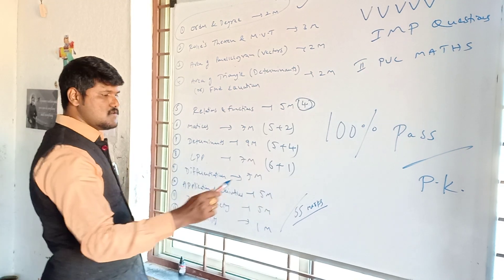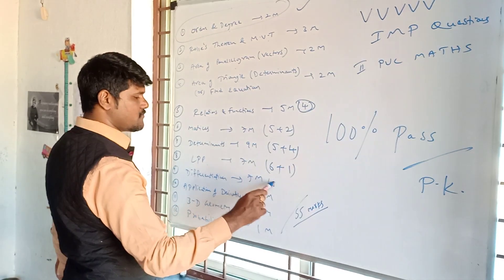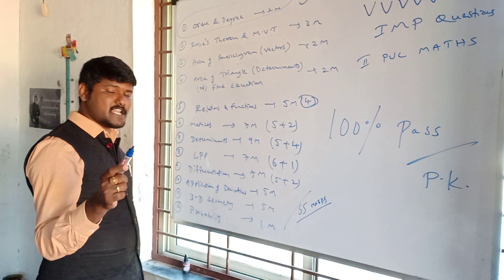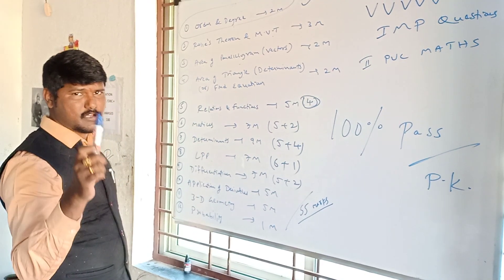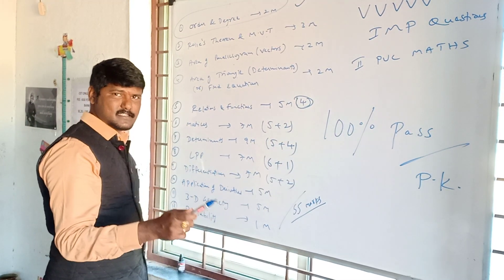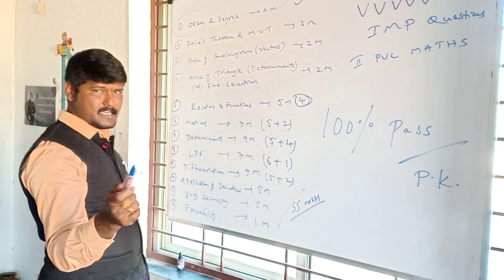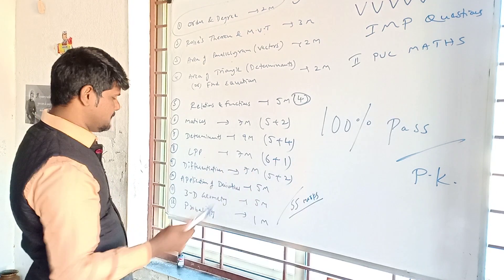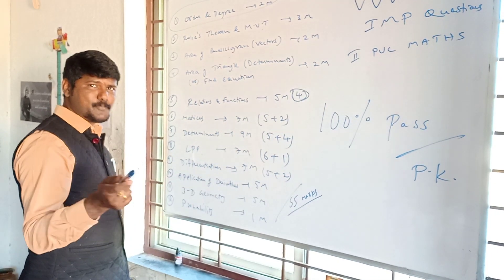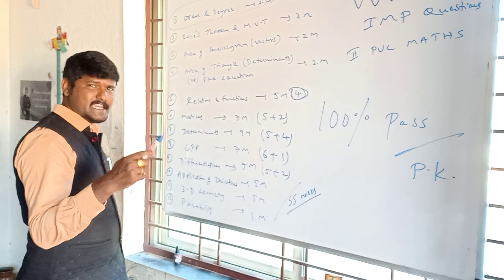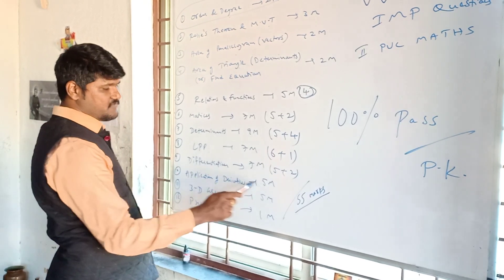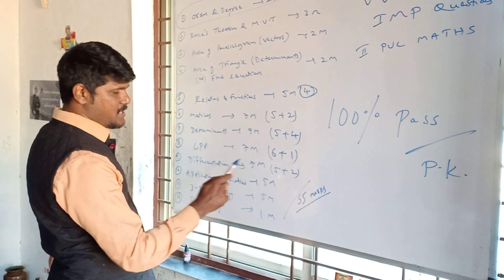Differentiation: 1 five-mark question and 1 two-mark question. For Rolle's theorem, we have 4 to 5 important questions; out of that, 1 question for 5 marks. And 2 marks — the 3rd or 4th axis questions are a lost 2-mark question. Application of derivatives: sand pouring or leaning against a wall. We have 4 to 5 questions; out of that, 1 question for 5 marks.